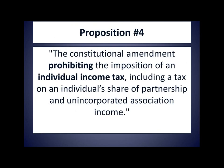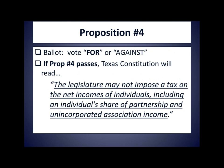Moving on to Proposition 4: 'The constitutional amendment prohibiting the imposition of an individual income tax, including a tax on an individual's share of partnership and unincorporated association income.' There has been considerable false and confusing chatter on social media about Proposition 4, and to me it's obvious that the intent is to keep Proposition 4 from passing. The ballot will read 'vote for or against,' not 'yes or no.' If Prop 4 passes on November 5th, the Texas Constitution will read: 'The legislature may not impose a tax on the net incomes of individuals, including an individual's share of partnership and unincorporated association income.' Let me give you more details about what else Prop 4 will do.